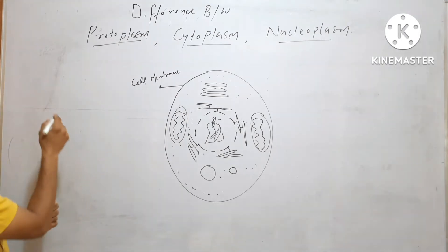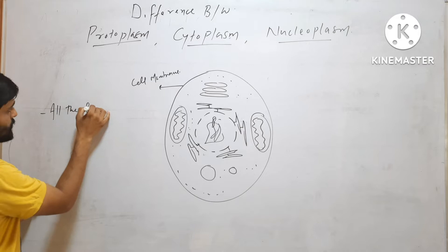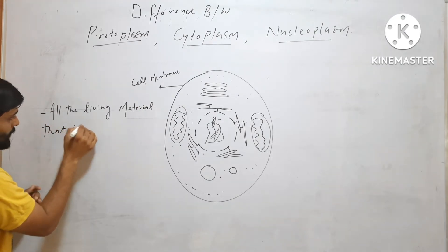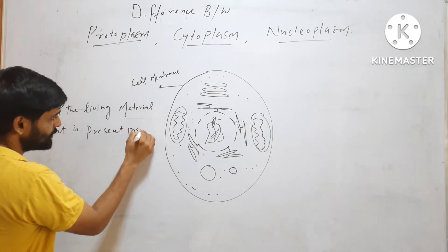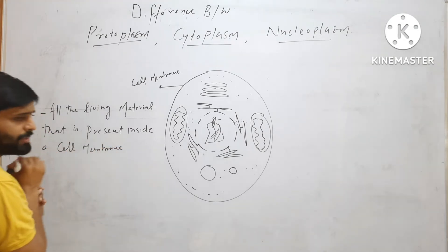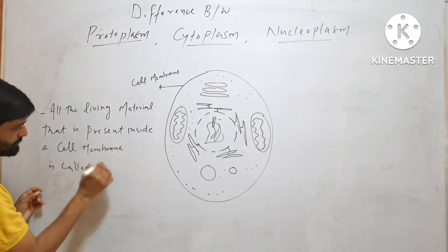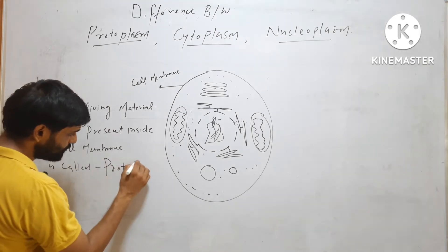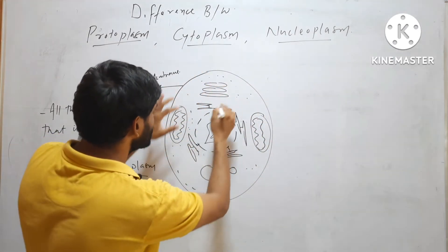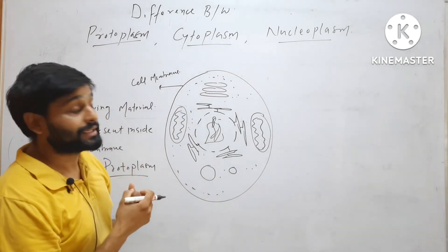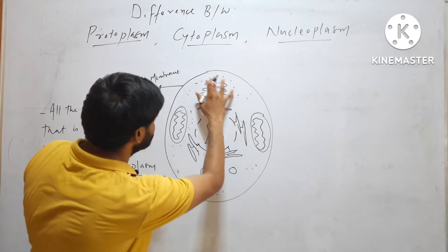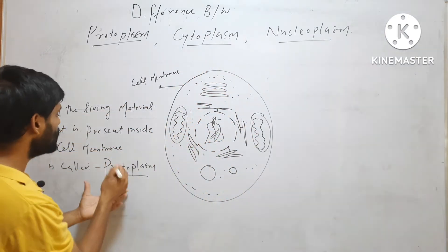So in that cell, all the living material that is present inside the cell membrane is called protoplasm. Here in that cell, this is the cell membrane — all the living liquid material present in the cell, all the organelles including the nucleus — all the living material present inside this membrane will be called protoplasm.